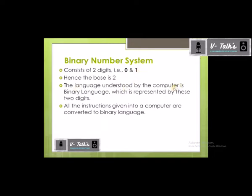The language understood by the computer is binary language, represented by these 2 digits. The computer only understands binary language. Whatever things we are typing, whatever instructions we give — like select, new, folder — we see it as English language, but in computer memory it is represented using only 0s and 1s. No other numbers, no other things. The computer only knows 0 and 1; it doesn't know English grammar or anything else.